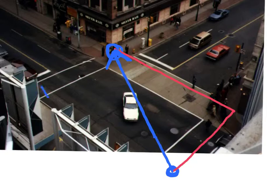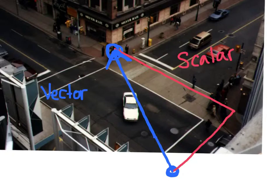Your distance is shown in red, whereas your displacement is the vector shown in blue. I'm using the term vector — a word used to describe a measurement that includes both a magnitude and a direction. Distance, on the other hand, is a scalar, and scalars only include a magnitude with no direction associated with them.